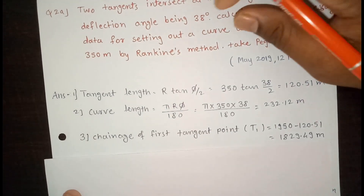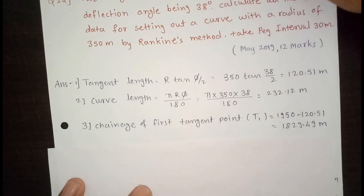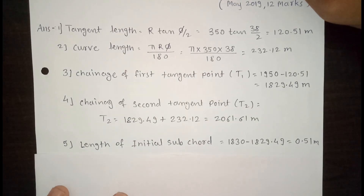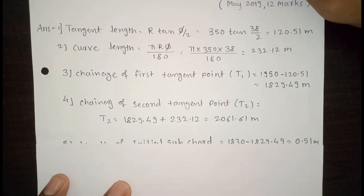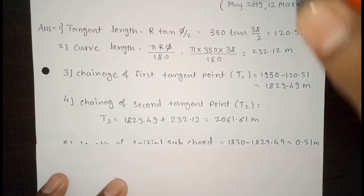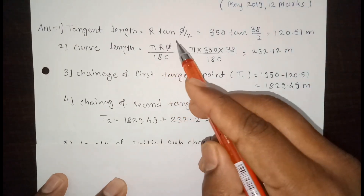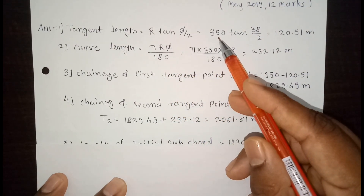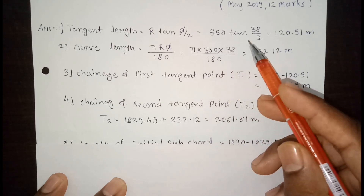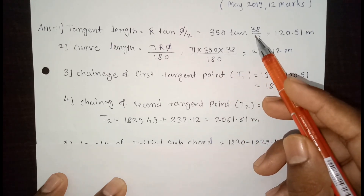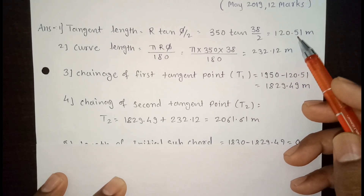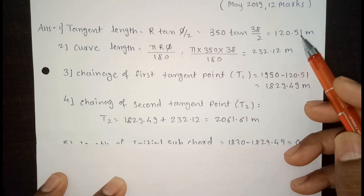The first design step is tangent length. We know the formula for tangent length is R tan(φ/2). R is the radius, which is 350 meters, and φ is 38 degrees as given in the question. So tangent length is 120.51 meters.